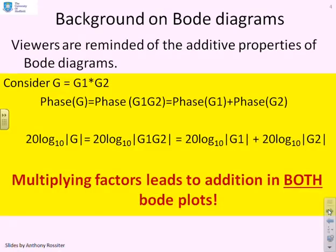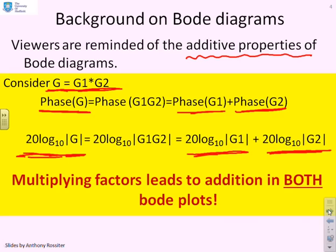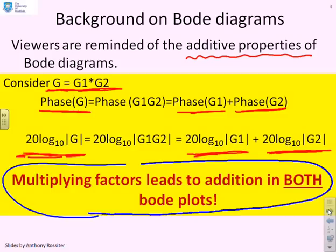Some background on Bode diagrams in general. You'll remember the additive properties of Bode diagrams: if you multiply two transfer functions together — g equals g1 times g2 — then the magnitude of g in decibels is the magnitude of g1 plus the magnitude of g2, and the phase of g is the phase of g1 plus the phase of g2. So if you multiply two things together, it's addition in both Bode plots.